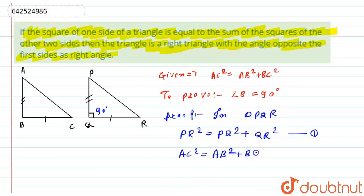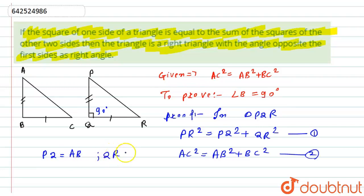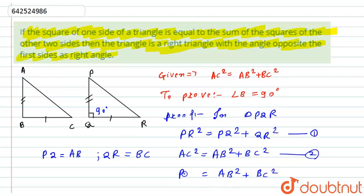As given above, AC squared equals AB squared plus BC squared — let this be equation number two. We have constructed triangle PQR such that side PQ equals AB and side QR equals BC. So from equation number one, on the place of PQ I can write AB, and on the place of QR I can write BC.